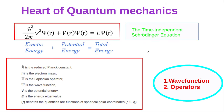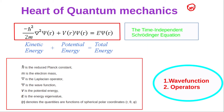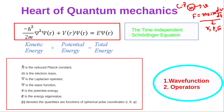Before saying anything about quantum mechanics, let me tell you about classical particles. If we have a classical particle of mass m moving with velocity v, then from Newton's second law we can write the equation F = ma or m(dv/dt). By solving this equation we can find the position, momentum, and energy of that particle at any instant of time.